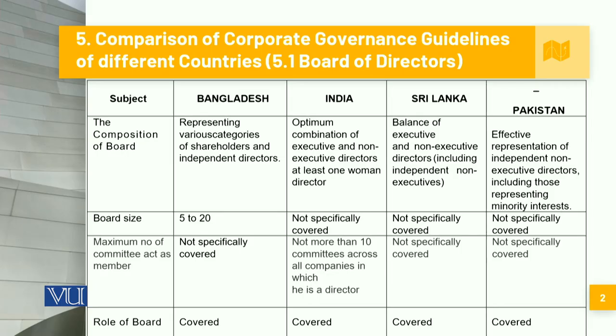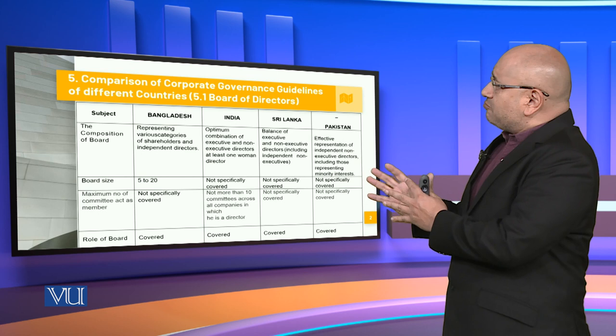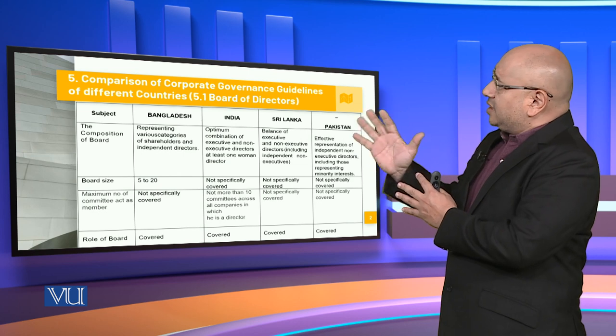First of all, let us look at the composition of the board. When we look at Bangladesh, they basically are representing various categories of shareholders and independent directors. While in India, we see the optimal combination of executive and non-executive directors with at least one woman director. In Sri Lanka, the balance of executive and non-executive directors including independent non-executive directors. And in Pakistan, effective representation of independent non-executive directors including those representing minority interests. So if we look at the composition of the board, even though there is a lot of similarity, there is a little bit of difference and differentiation between the four.